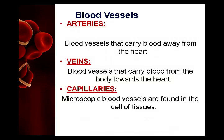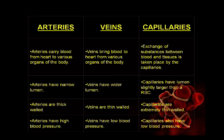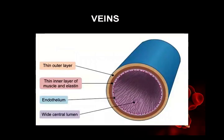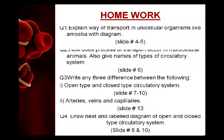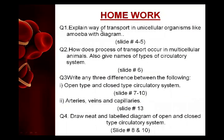Take a screenshot of the differentiation of capillaries, artery structures, and veins. You can also study further details in your book. The home task is: question one - explain the way of transport in unicellular organisms like amoeba with diagram, answer from slides 4 and 5; question two - how does transport occur in multicellular animals and give types of circulatory system, from slide 6; question three - write three differences between open type and closed type circulatory systems in columns, from slides 7 to 10; question four - draw neat labeled diagrams of open and closed type circulatory systems from slides 8 and 10.